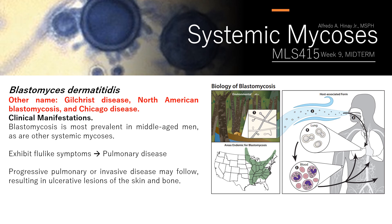Our first systemic mycosis is Blastomyces dermatitidis, also known as Gilchrist's disease, North American blastomycosis, and Gilchrist-Stokes disease. Take note that in systemic mycosis, the majority of disease names are based on location, because systemic mycoses are geographically restricted.